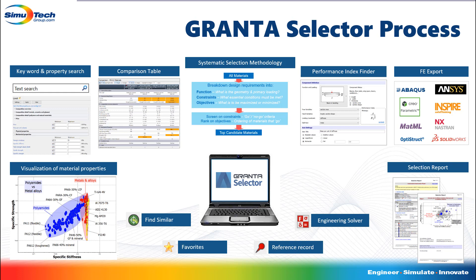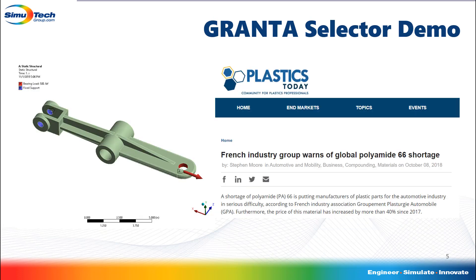Now that we've gone over the basics of the ANSYS Granta Selector, I'll show you an example of how the Granta Selector can be used to solve a real-world problem. In this example, we have a rocker arm made from polyamide-66, or PA-66. However, a global shortage is currently driving up the price of that material by more than 40%, so we need to use the Granta Selector to find a suitable, cost-effective alternative.